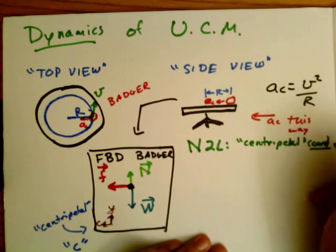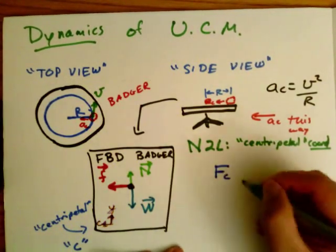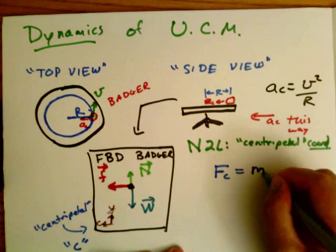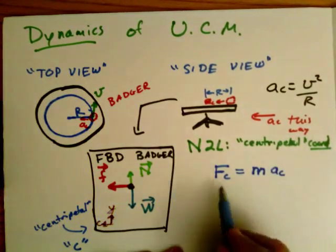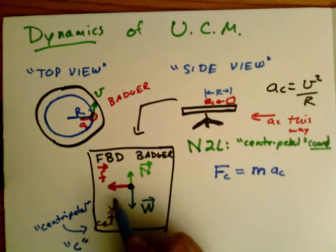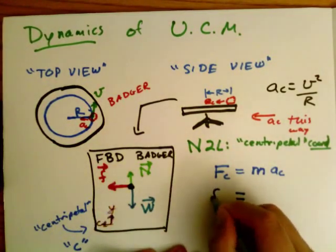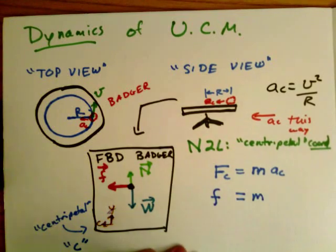So now I write down Newton's second law in the centripetal coordinate: f sub c equals m a sub c. The net force in the centripetal direction is equal to the mass times the centripetal acceleration. That's Newton's second law. And the only force that points that way is the force of friction.